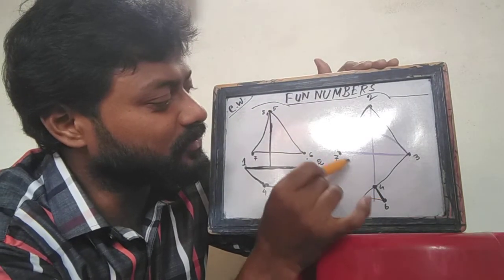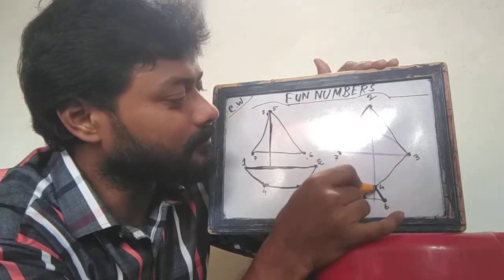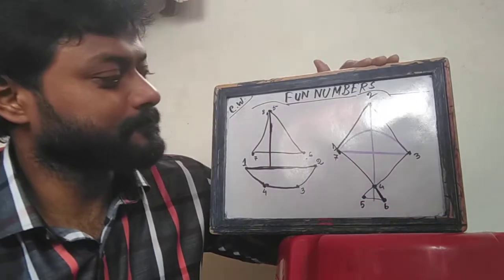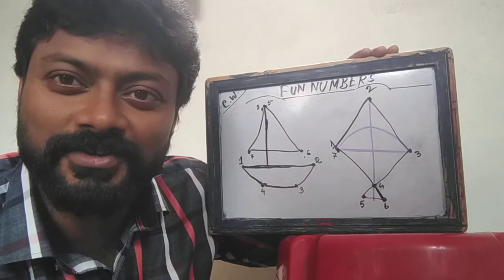And from 6 to... We have to find 7. So 6 to 7 here. We got a kite. You see?